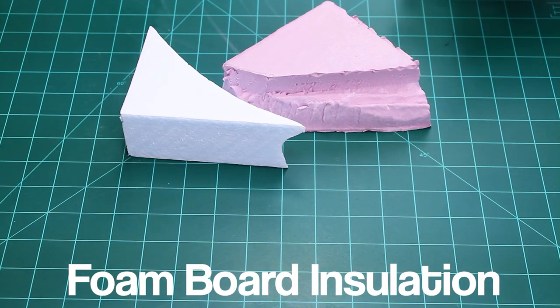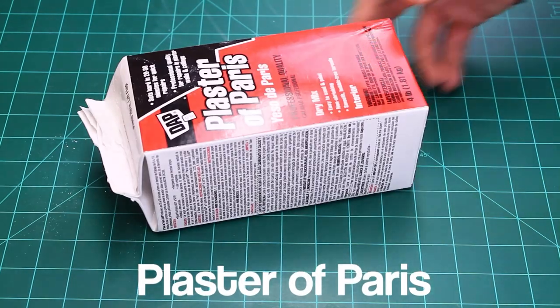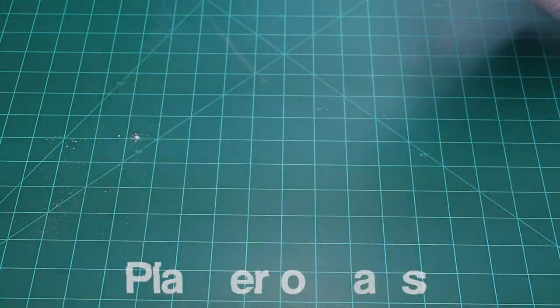So to start off, you need foam board insulation. These are just scrap pieces, but we'll use big pieces, the 2x2 I think. And then plaster pairs, this is for all of our cliffs and everything like that.